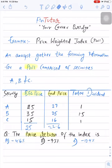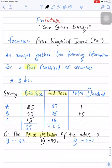An analyst gathers the following information for a price-weighted index comprised of securities A, B, and C. Information about beginning price, ending price, and total dividend is given. We need to compute the price return of the index. Focus on the word 'price return' — this means we can ignore the dividend information.